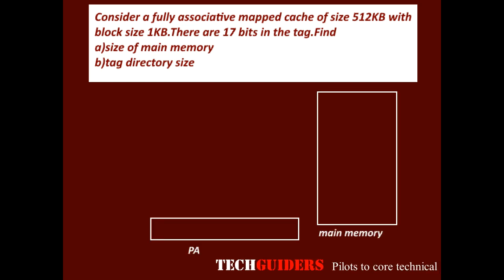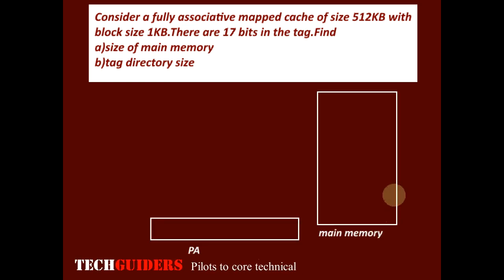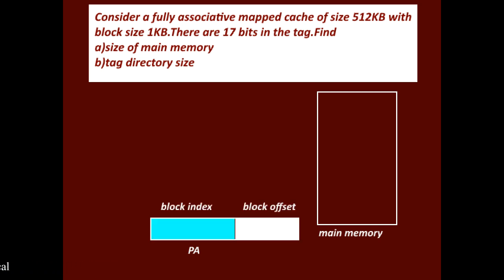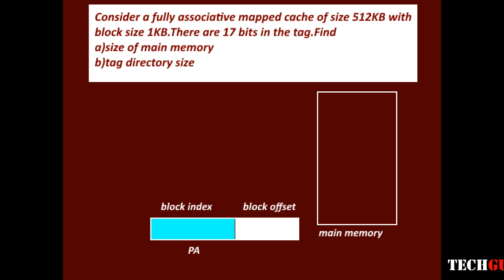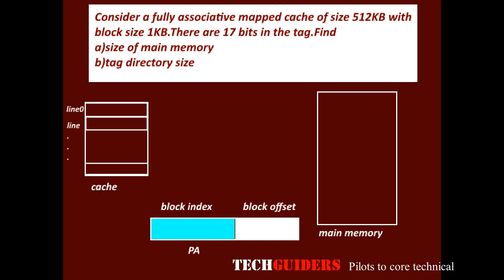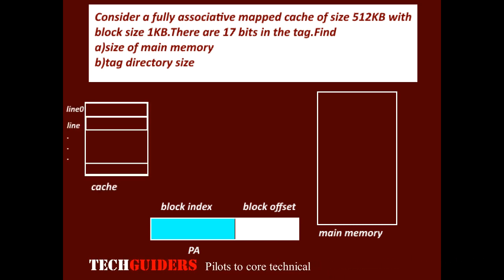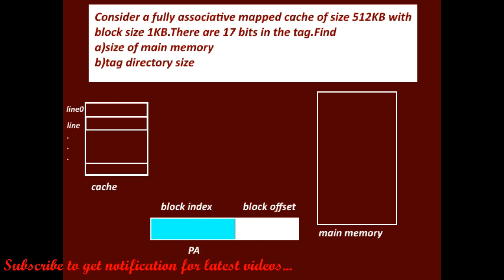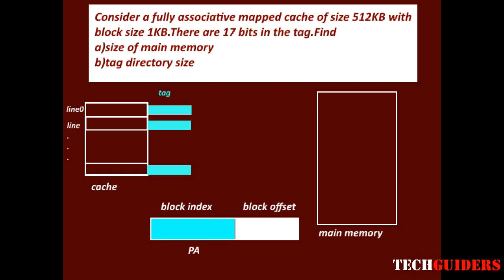The physical address refers to the main memory and can be divided into two parts: the block number or block index, and the block offset. In fully associative mapping, we can place any main memory block in any cache line, and the complete block index is used as the tag. The number of bits used for the tag is given as 17 bits, hence the block index is 17 bits.